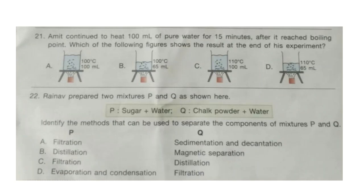Amit continued to heat 100 ml of pure water for 15 minutes after it reached boiling point. Which of the following figures shows the result at the end of his experiment? Look at the options and try to find out the answer. The correct answer is option B. After reaching boiling point, i.e. 100 degrees Celsius, the temperature does not increase and water starts evaporating, so the level of water will decrease. Correct answer is option B.